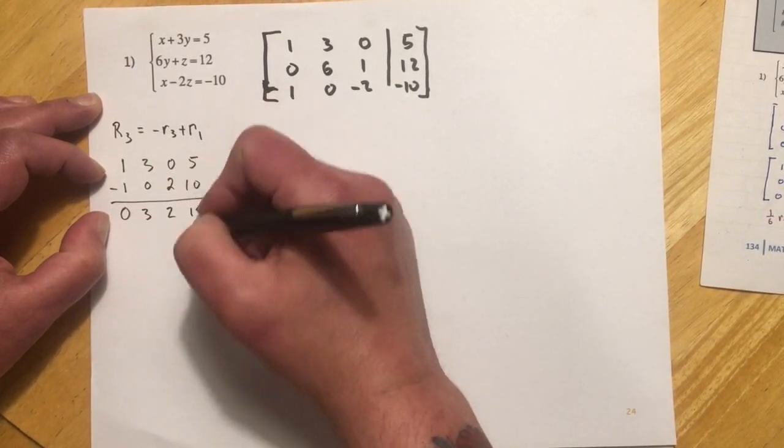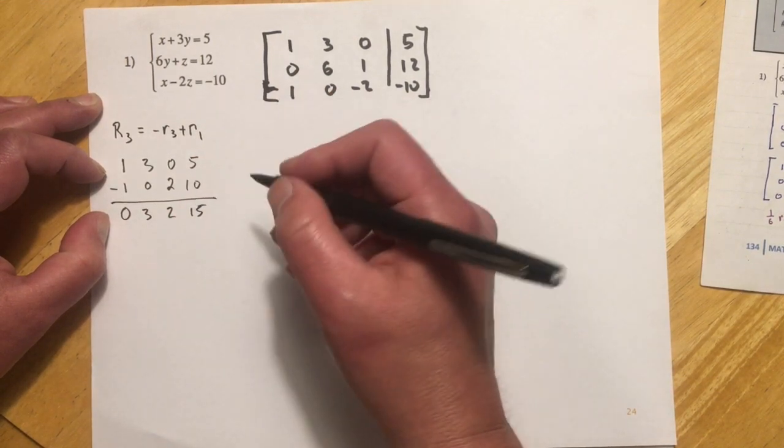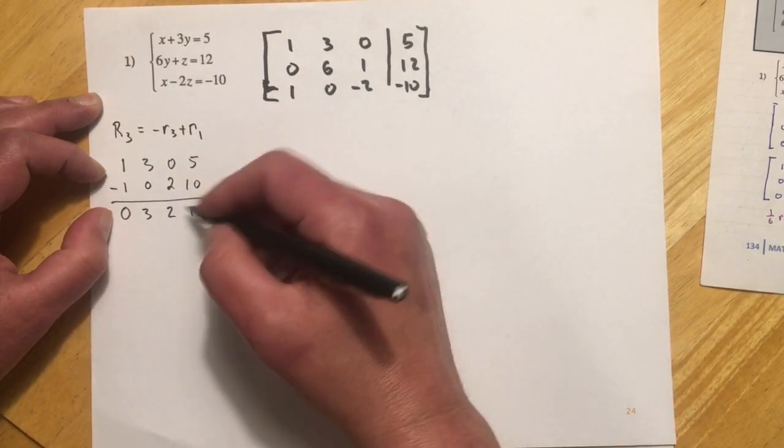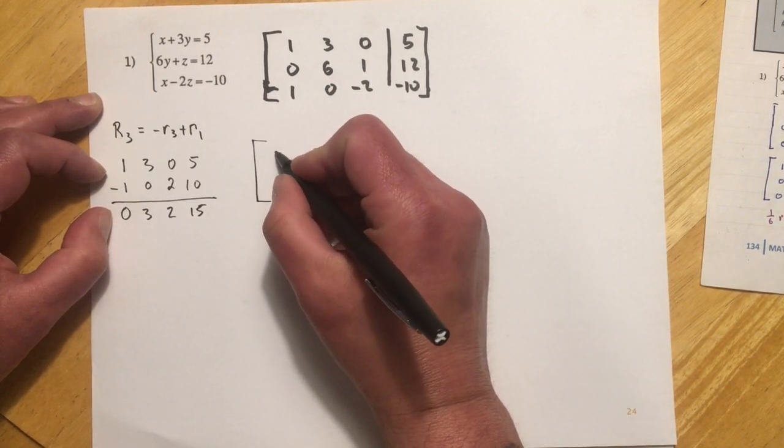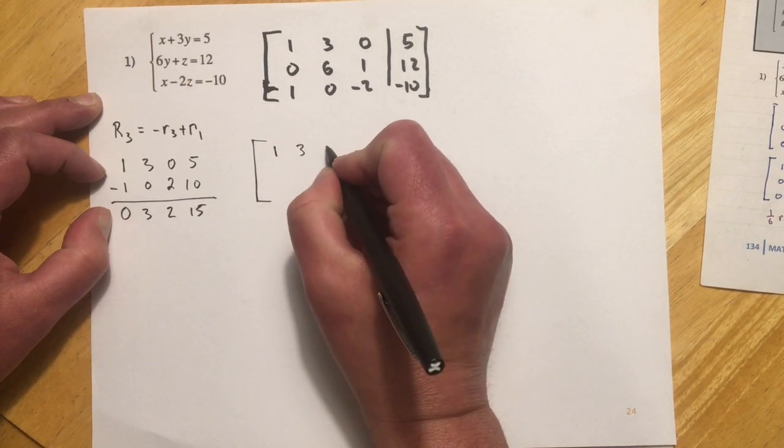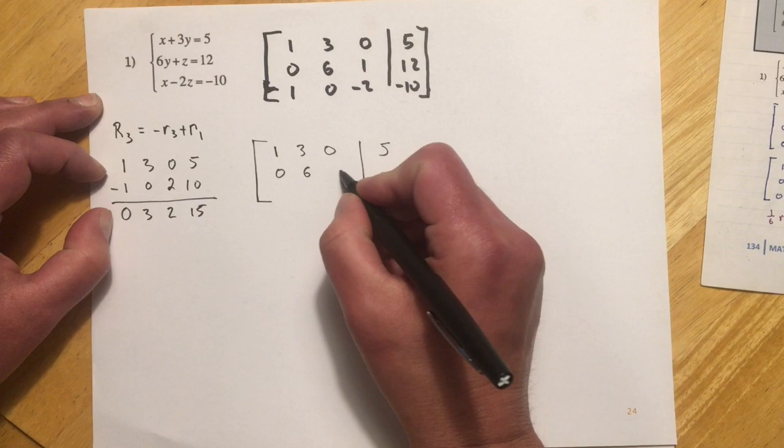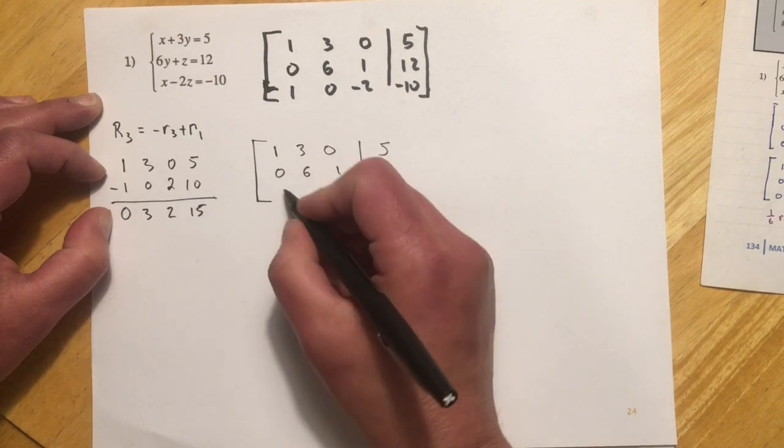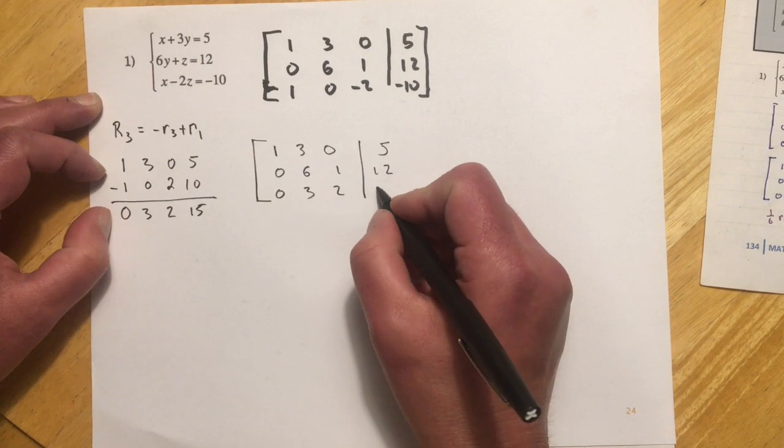So you can kind of see it makes it a little bit easier to look at without all the x's, y's, and z's running around. It's just a little bit cleaner. So that's sort of the advantage of this version. So if I rewrite the matrix, and there's a lot of rewriting of the matrix. So I get this. I haven't done anything to row 2, so I'm just going to write that one out. And then my new row 3 is 0, 3, 2, and 15.